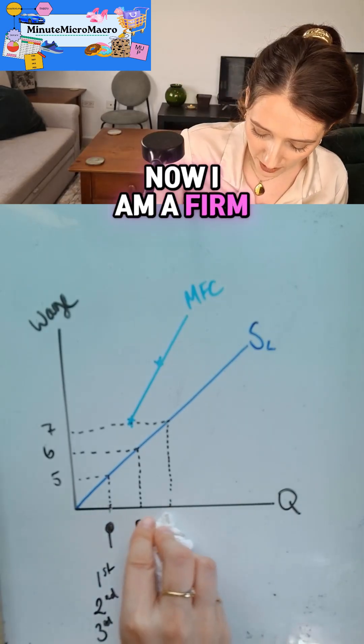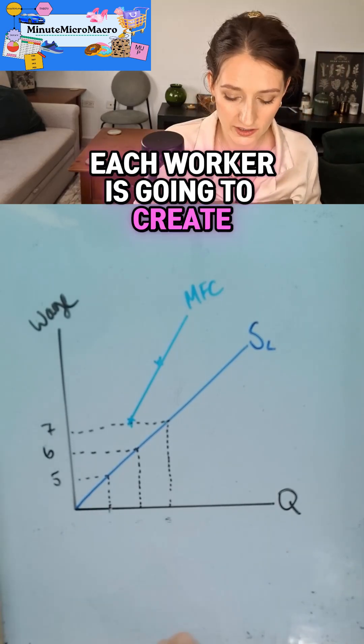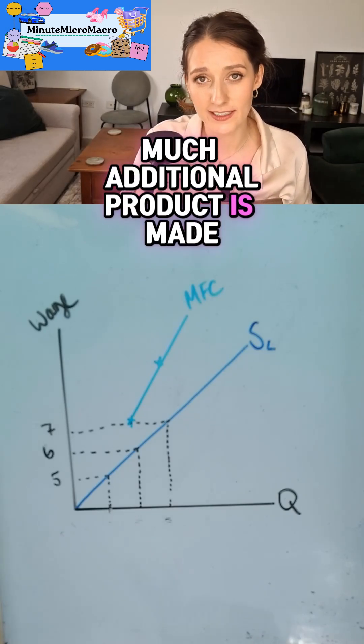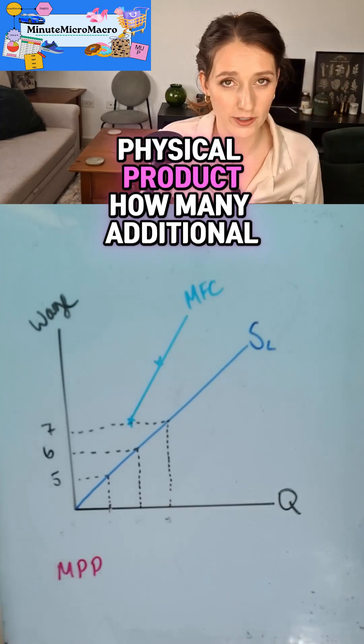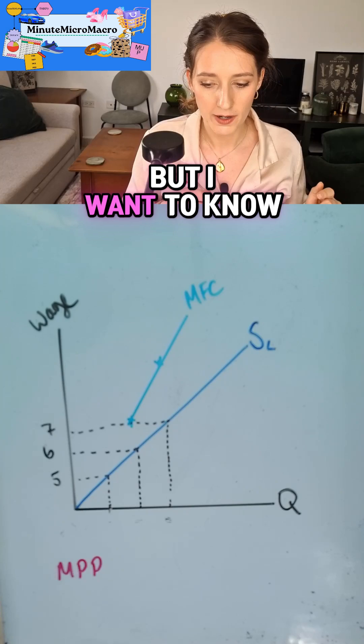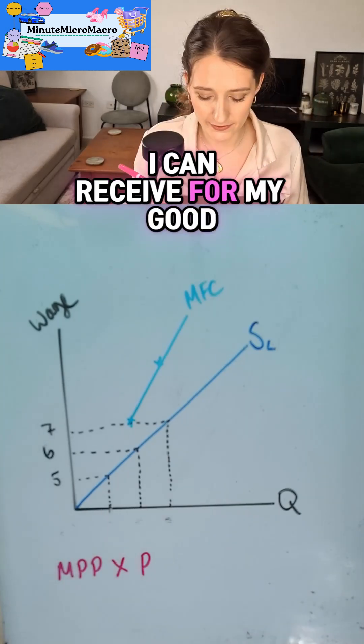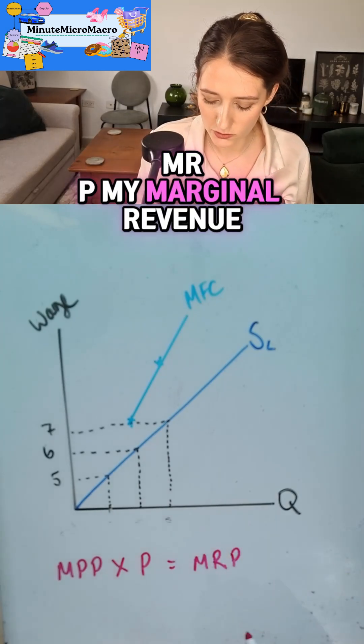I am a firm who needs to decide how many workers to hire. Each worker is going to create some products. I want to know how much additional product is made by each worker. So I can work out my marginal physical product, how many additional units of my product they make. But I want to know how much money that then brings me. If I times that by the price that I can receive for my good, that's going to give me my MRP, my marginal revenue of product.